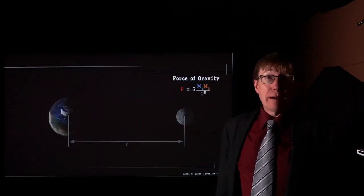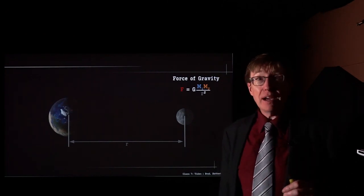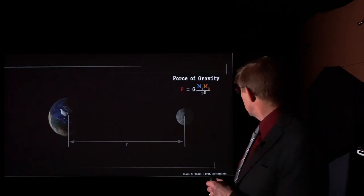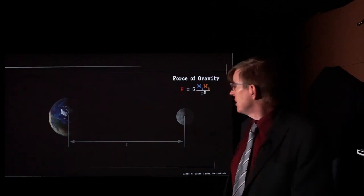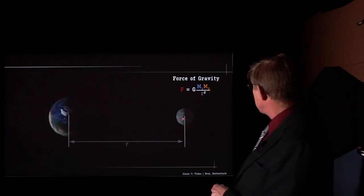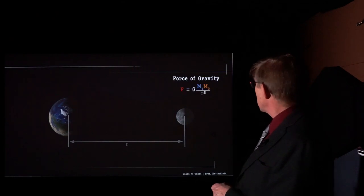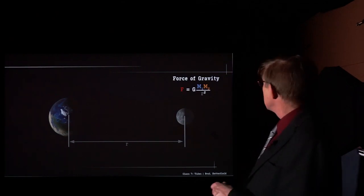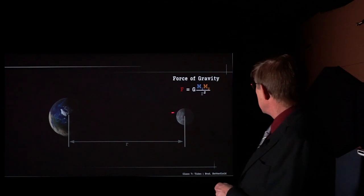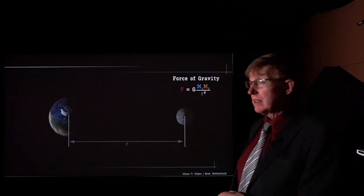Now on to our new topic for the day. We're going to take these same ideas about force and apply them to understanding where tides come from. Here we have the Earth — looking down at the North Pole — and here we have the Moon. We have the force of gravity: force equals G times M1 times M2 over r squared, where M1 is the mass of the Earth, M2 is the mass of the Moon, and r is the distance between the centers.